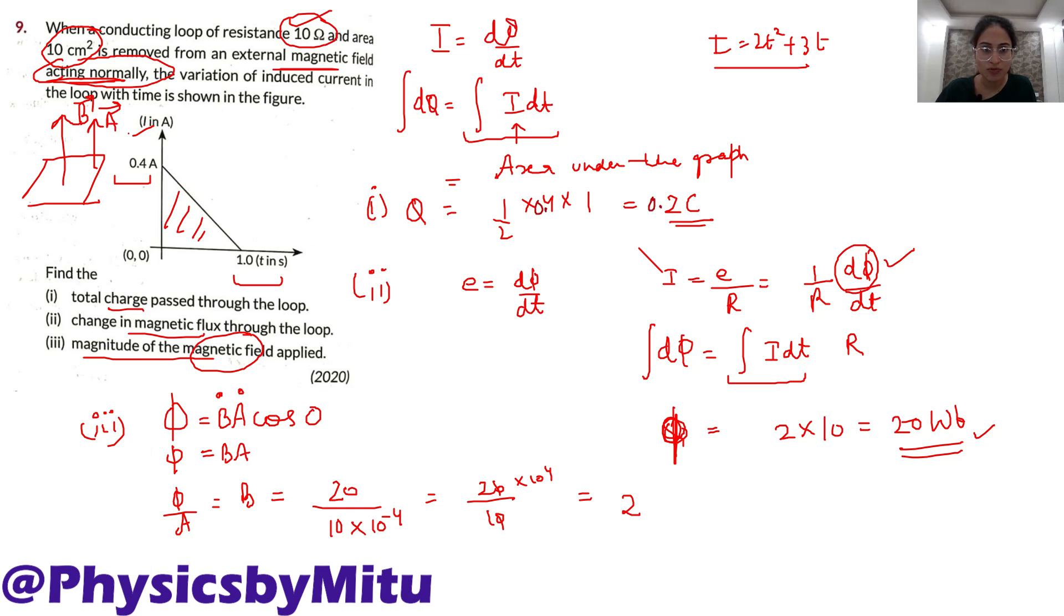So this will be 0.2. Okay, 0.2 into 10 is 2 Weber and here 2 upon 10 centimetre square is 10 raise to minus 4 se multiply karo ga to convert into centimetre. So answer is 2000, 2000 tesla. This is your magnetic field.